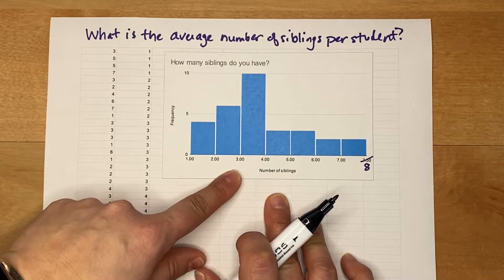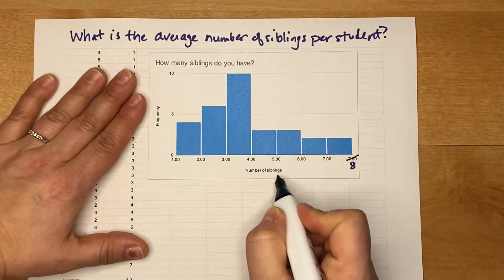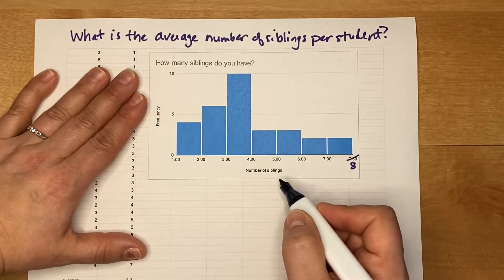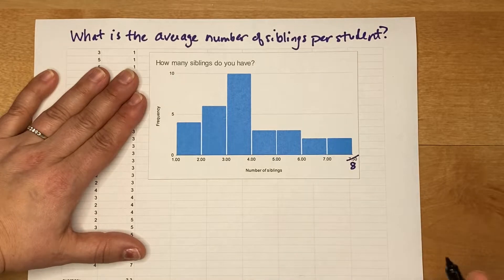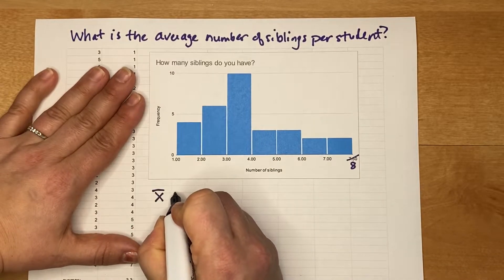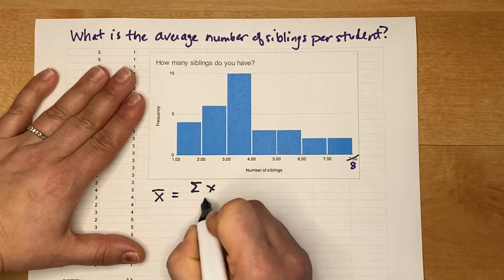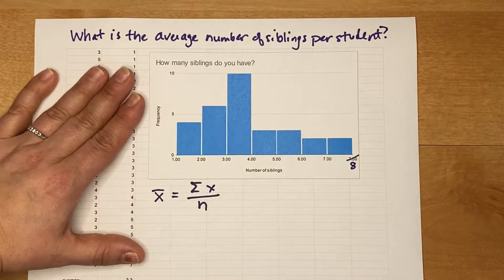So we're just going to start with the histogram here. To compute the number of siblings that each student has on average, we're computing an average, so that's X̄. We know that to compute an average we're going to add up something and then divide it by a total. So what is the something and what is the total?